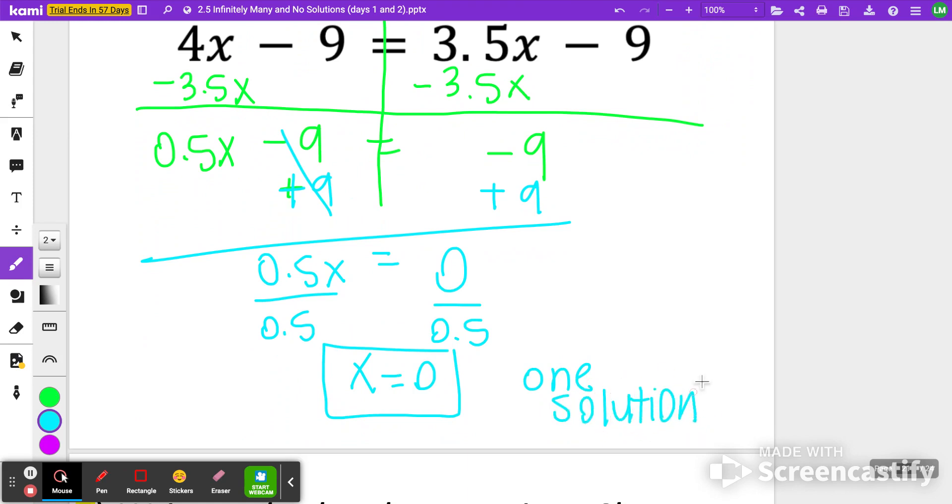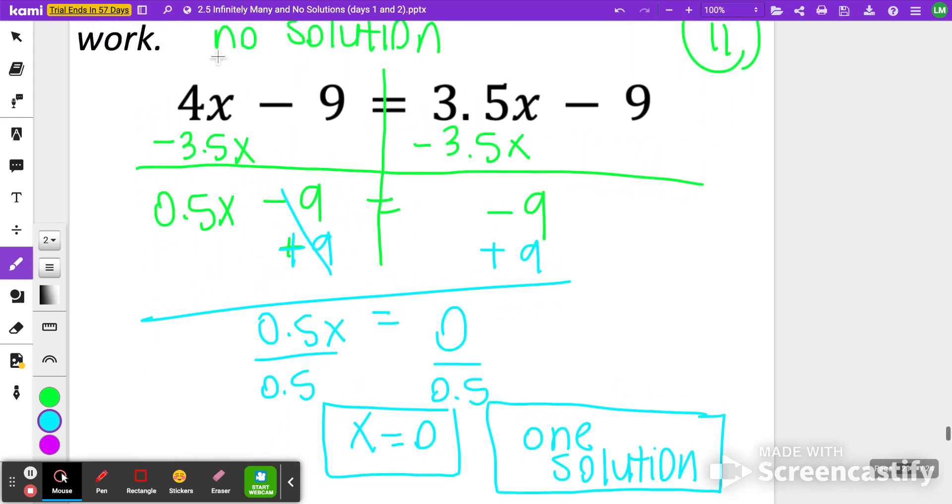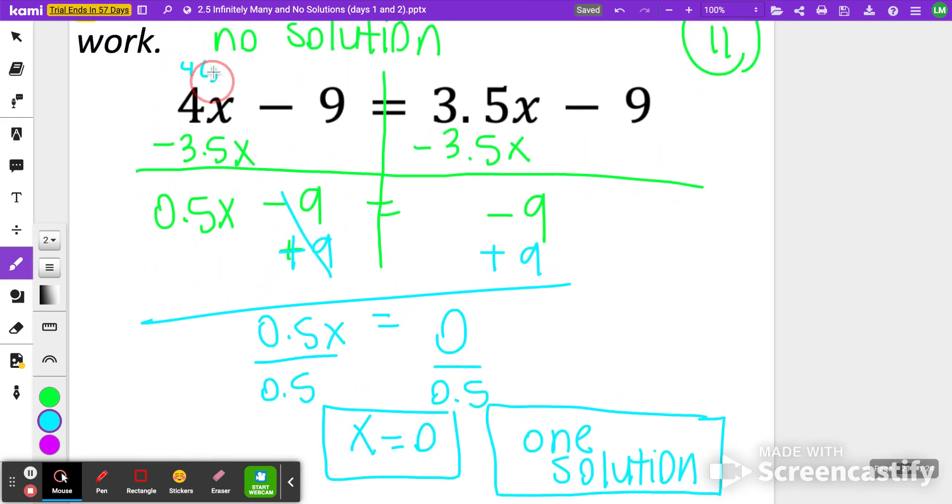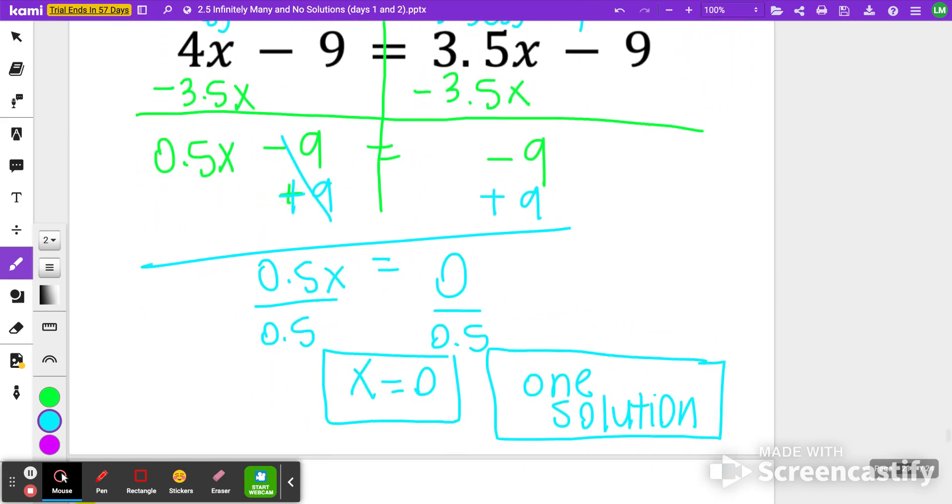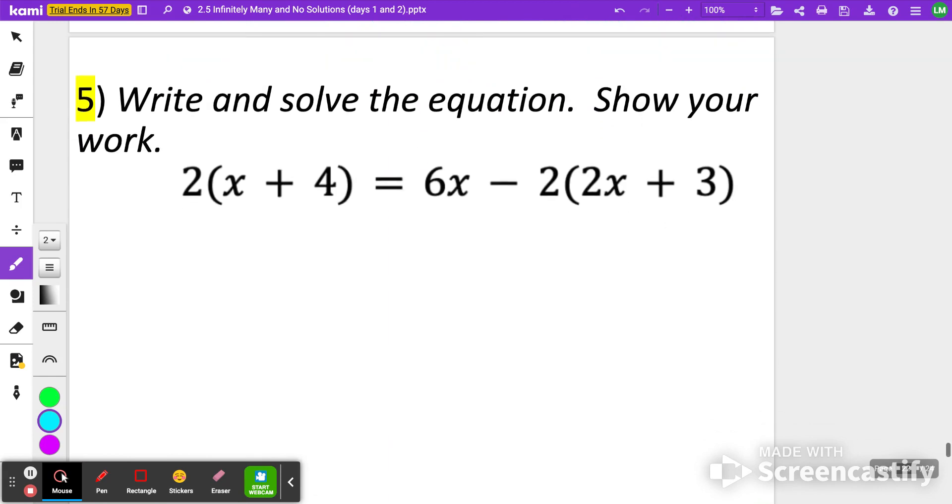So that's probably why we also want to make sure we're writing out what we've got. If I want to go and plug this back in, 4 times 0 minus 9 is equal to 3.5 times 0 minus 9. So if you notice that your constants are matching like the minus 9 minus 9, but your variables are not matching with the coefficients, that probably means X will be equal to 0, 1 solution.